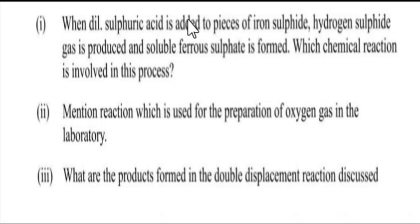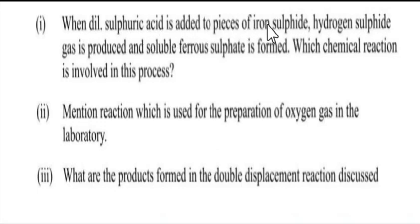When dilute sulfuric acid is added to pieces of iron sulfide, hydrogen sulfide gas is produced. Along with hydrogen sulfide gas, soluble ferrous sulfate is also formed.